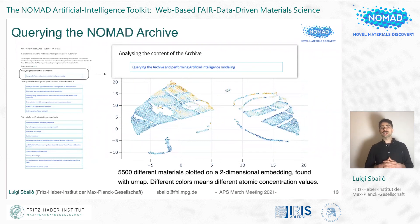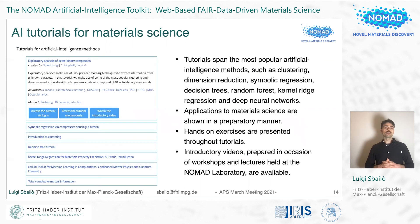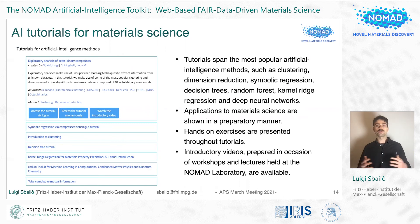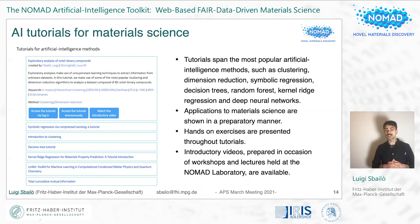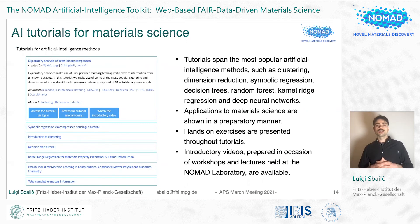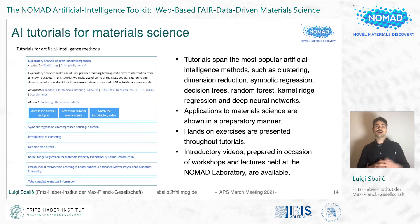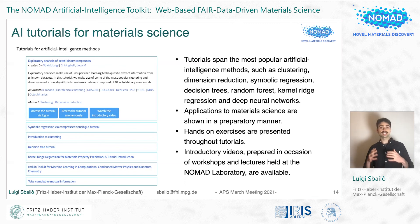Here the different colors represent different values of the atomic concentrations. The AI toolkit also offers a number of tutorials that guide through the most common machine learning methodologies: deep learning, random forest, kernel ridge regressions, and many others. These tutorials also have hands-on exercises to facilitate learning and introductory videos explaining the goal of each tutorial. Differently from many tutorials available online, these are targeted for material scientists, meaning the datasets used are mainly composed of material science data.